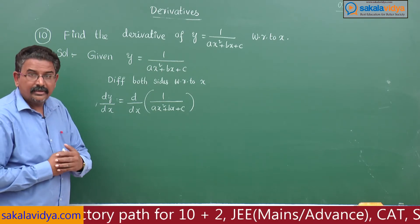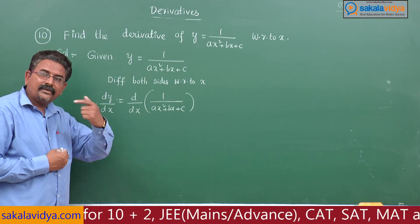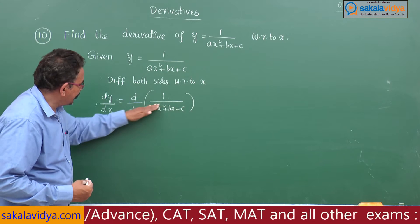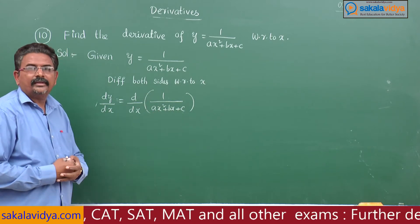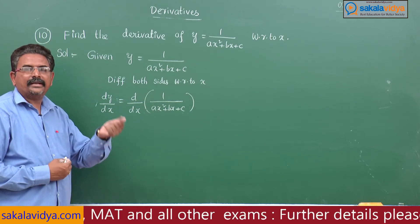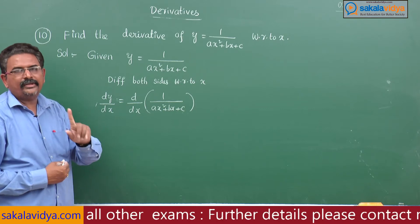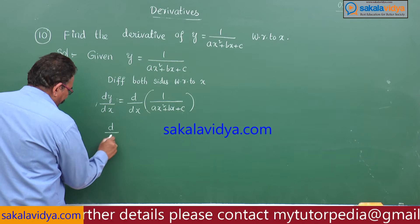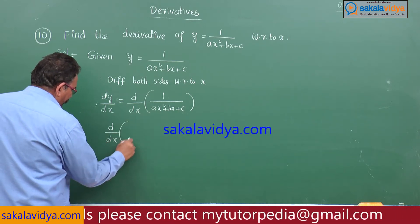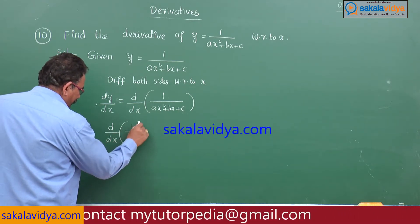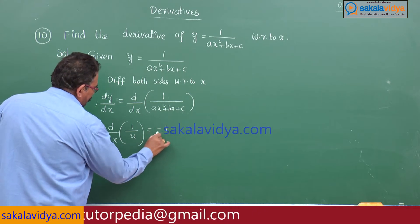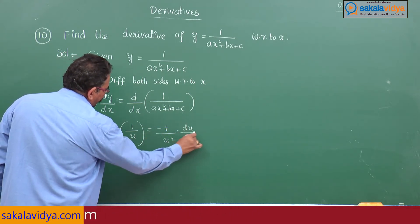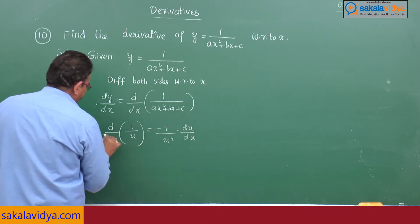Suppose instead of x, another function u is there. d by dx of 1 by u — the derivative of 1 by u is minus 1 by u square into du by dx. Remember that formula: d by dx of 1 by u, where u is a function of x, is minus 1 by u square into du by dx.